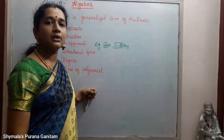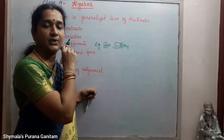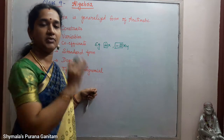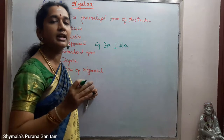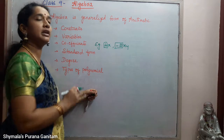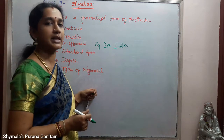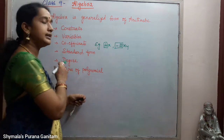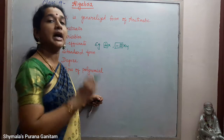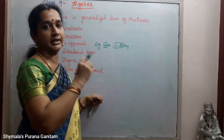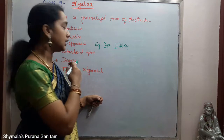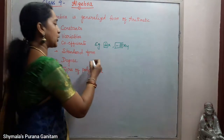Then, standard form. Standard form means when we are writing the terms in the algebraic expression, if we are arranging the terms in either ascending order or descending order, that will be termed as the standard form. Then, degree — the degree of a given expression is the highest value in the given expression, and that is called the degree of the given polynomial.